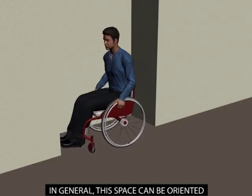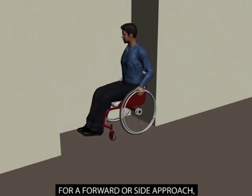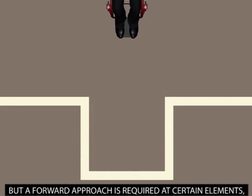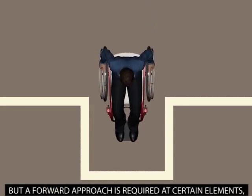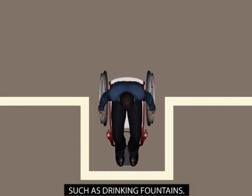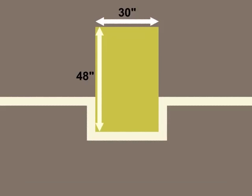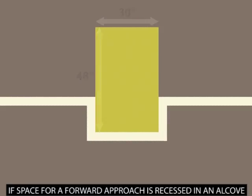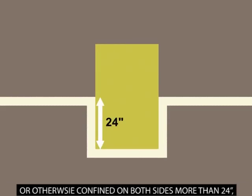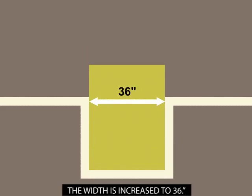Wheelchair space is required at accessible building elements. In general, this space can be oriented for a forward or side approach. But, a forward approach is required at certain elements such as drinking fountains. This space must be at least 30 inches wide and 48 inches long. If space for a forward approach is recessed in an alcove or otherwise confined on both sides more than 24 inches, the width is increased to 36 inches.